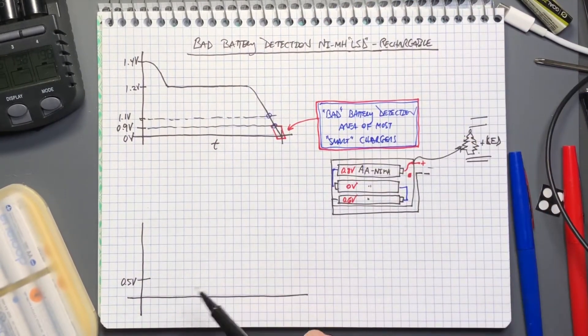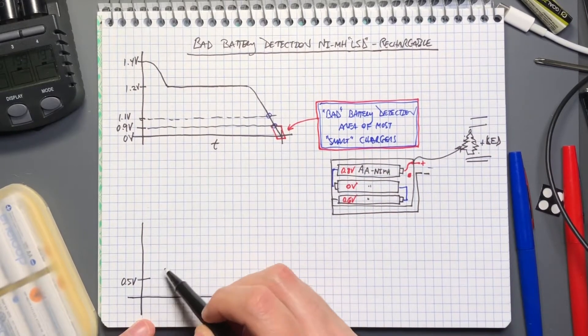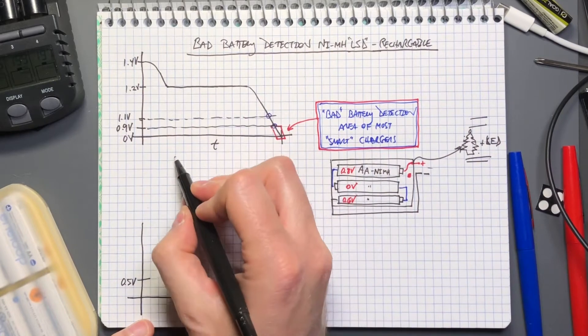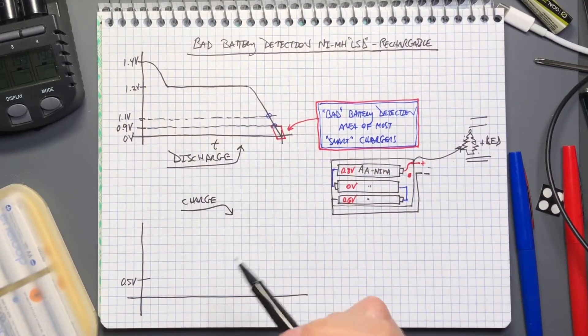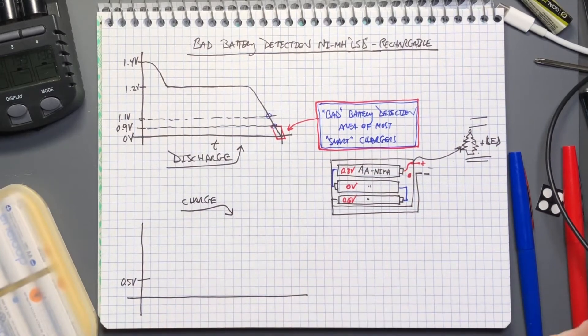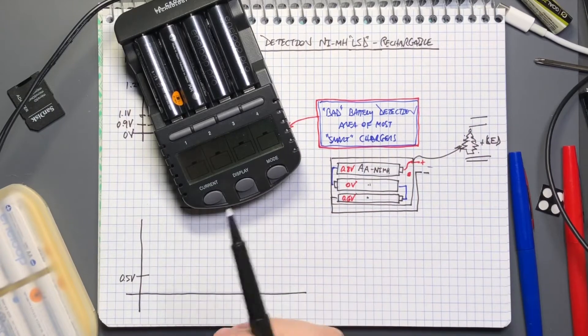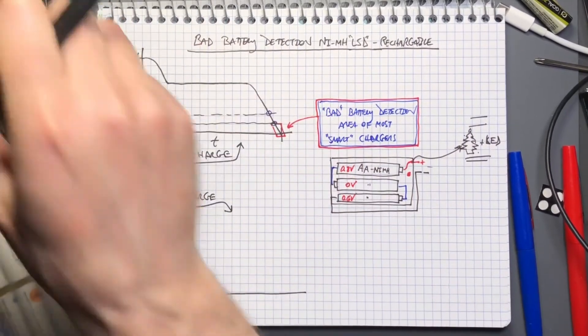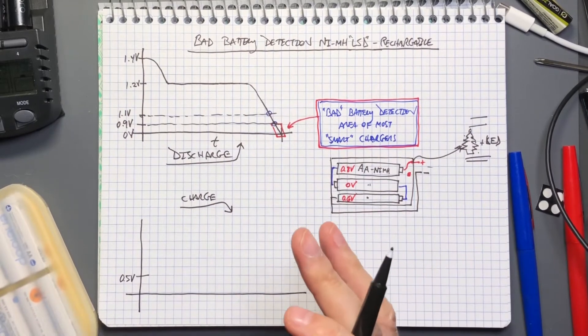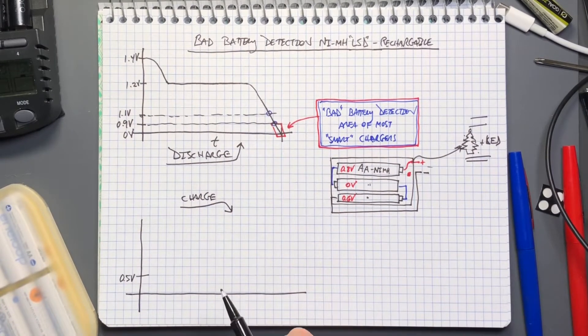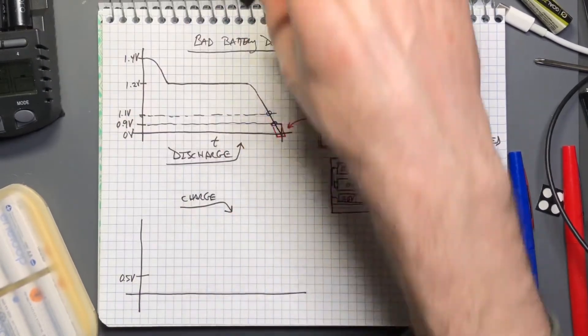When you try to charge a cell back up, if the cell comes in and you're going to apply some constant current to it, in the case of these Eneloop Pros it's about 200 milliamps, you want to know you're not applying it to zero volts because you could have a short circuit. You would preferably not be shorting out the internal chemistry of the battery.